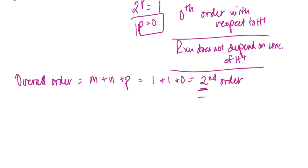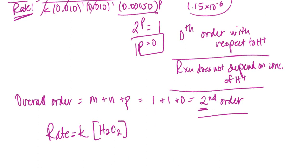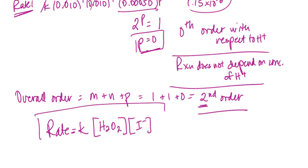To write the final rate law: the rate is equal to the rate constant K times the concentration of peroxide raised to the first power — the exponent 1 is understood and not written — times the iodide ion concentration. Since the reaction order for the hydrogen ion is zero, we don't include it in the rate law at all. This is the final rate law for this reaction.